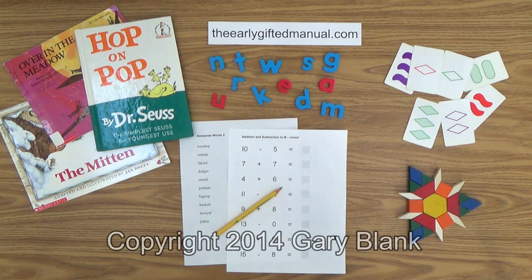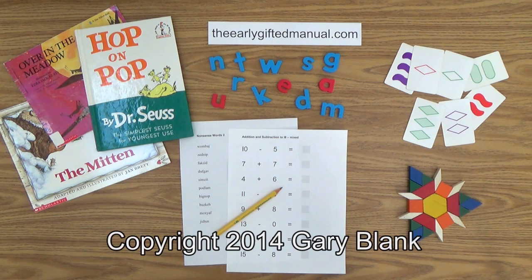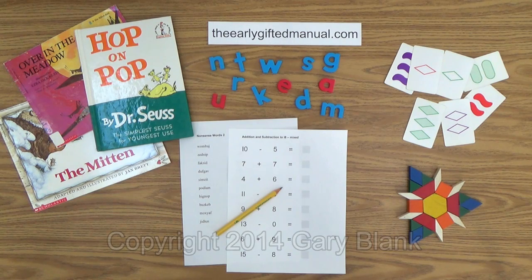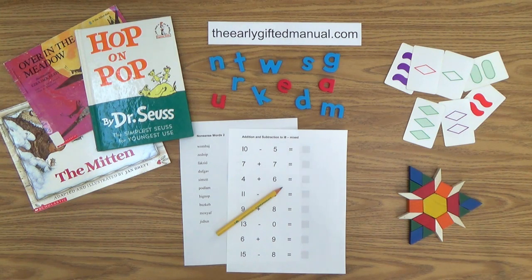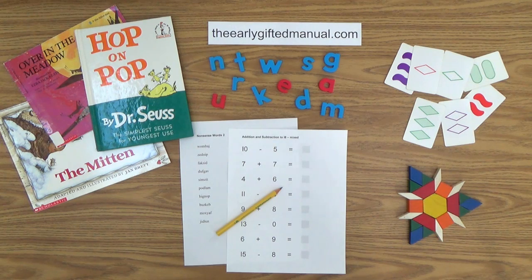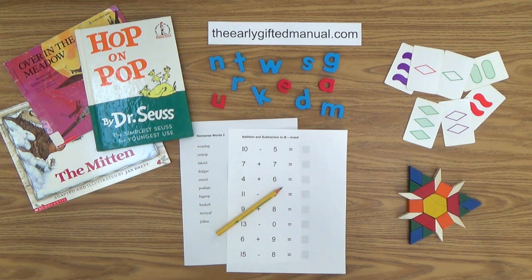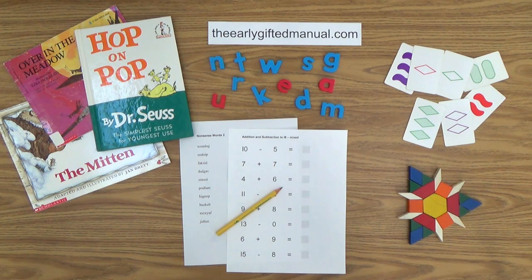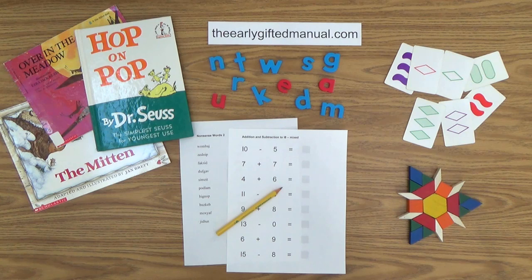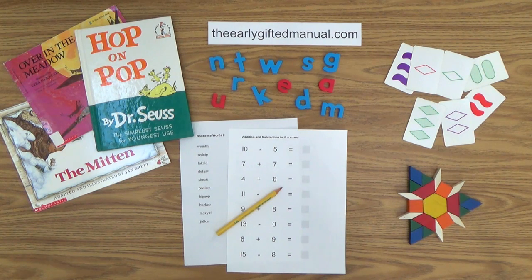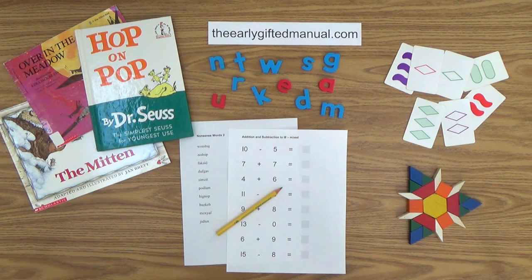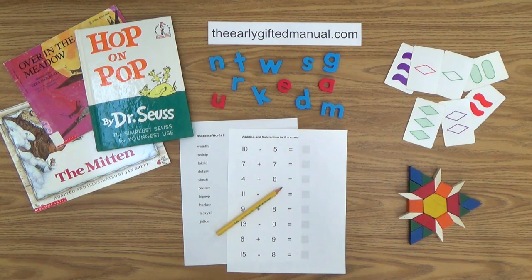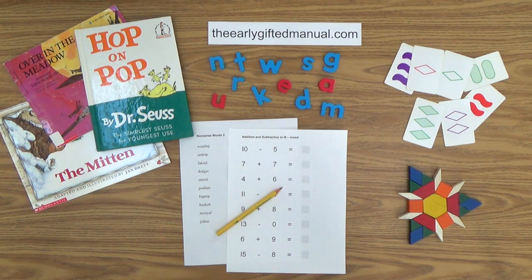Welcome to another parent-teacher video lesson from theearlygiftedmanual.com, a free website for homeschooled children three to seven years old and their parents that promotes and develops giftedness at an early age. I am Gary Blank, the creator of that site, and your host and facilitator for this video and all of the videos in my educational program. As the video lessons are designed to work in conjunction with the program on my website, I ask you to, at some point, click on the URL link in the description box below, and this action will take you to theearlygiftedmanual.com. By doing that, you will be able to put this lesson and all of the video lessons here on my channel in the proper context of the total program that I am presenting to you and your child.